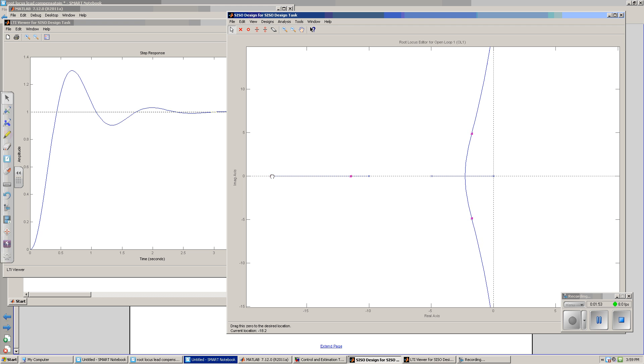As I slide the zero to the right, notice that the root locus is shifting left, meaning it's speeding up. Step response is getting faster. I'm also getting less overshoot. If I move the zero too far right, I've actually slowed down the system. And too far can actually make it go unstable.